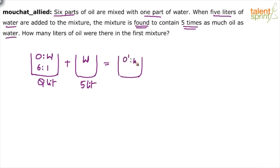Let's say this is O dash and W dash. Here it is found that oil is five times the water. That means the ratio is five is to one. What is the quantity? Q plus five. Initial quantity, Q liters. Then we added five liters. So final quantity will become Q plus five liters.